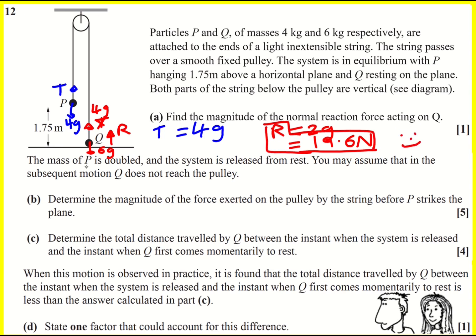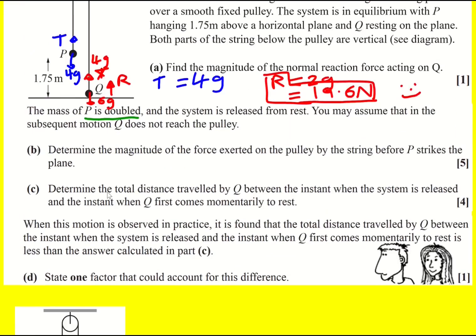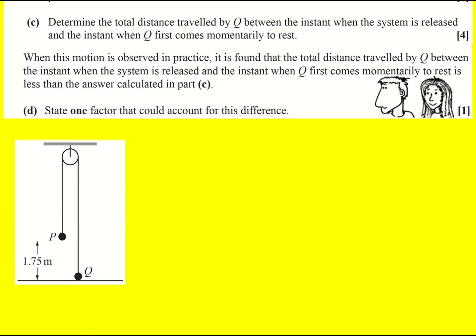Moving on, we're told that the mass of P is doubled. So in fact, it's going to become 8 kilograms, and it's going to cause Q to move up, P to move down. I'm going to get a new diagram for this. So now Q, I was doing it in red, so I've got 6G acting down still, tension acting up. It's going to be different though from before. And on P it's now 8G, and a tension acting up.